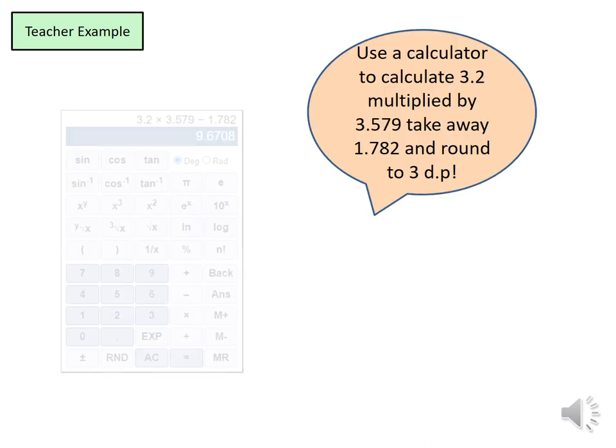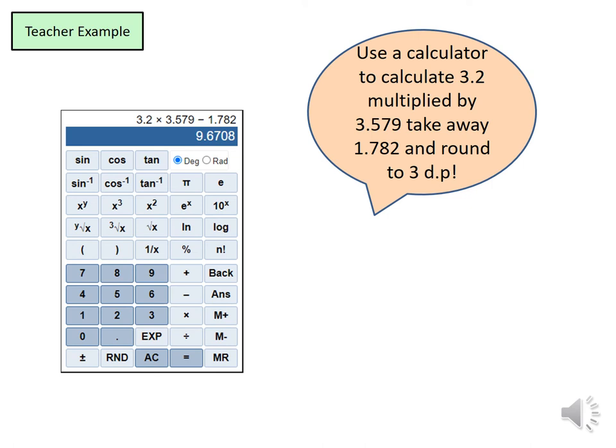We have another example here. It says use the calculator to calculate 3.2 multiplied by 3.579, take away 1.782. So 3.2 multiplied by 3.579, subtract 1.782. Just a little reminder, these are where your operations will be found in the calculator. And now when you press equals, you will get an answer here.